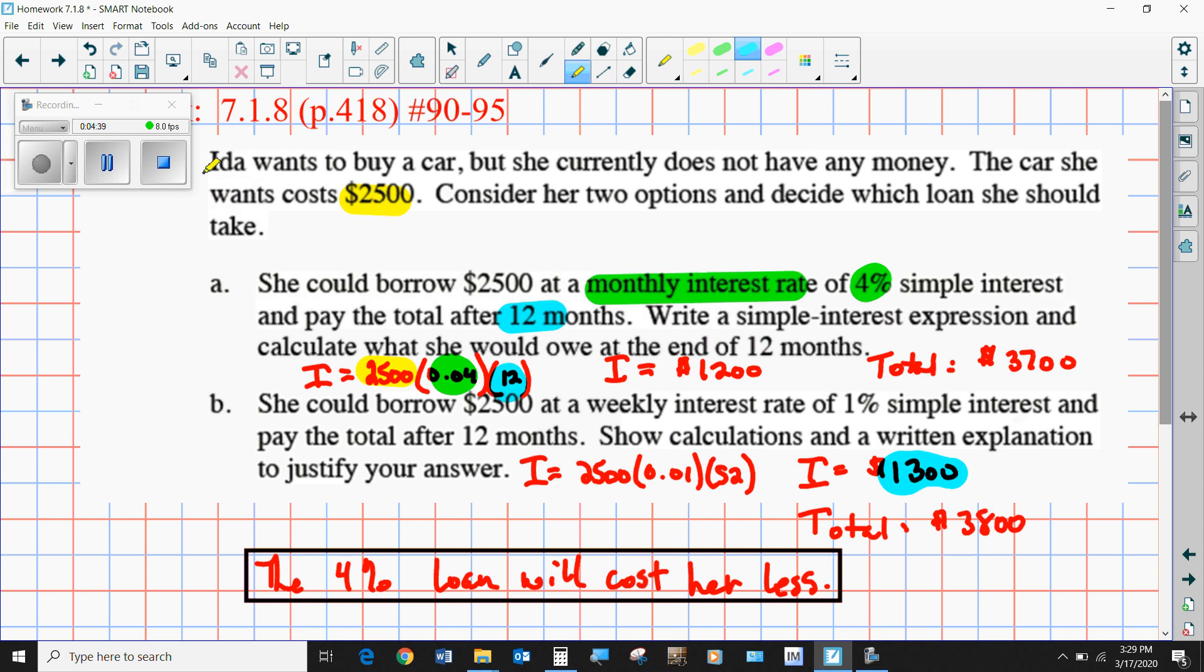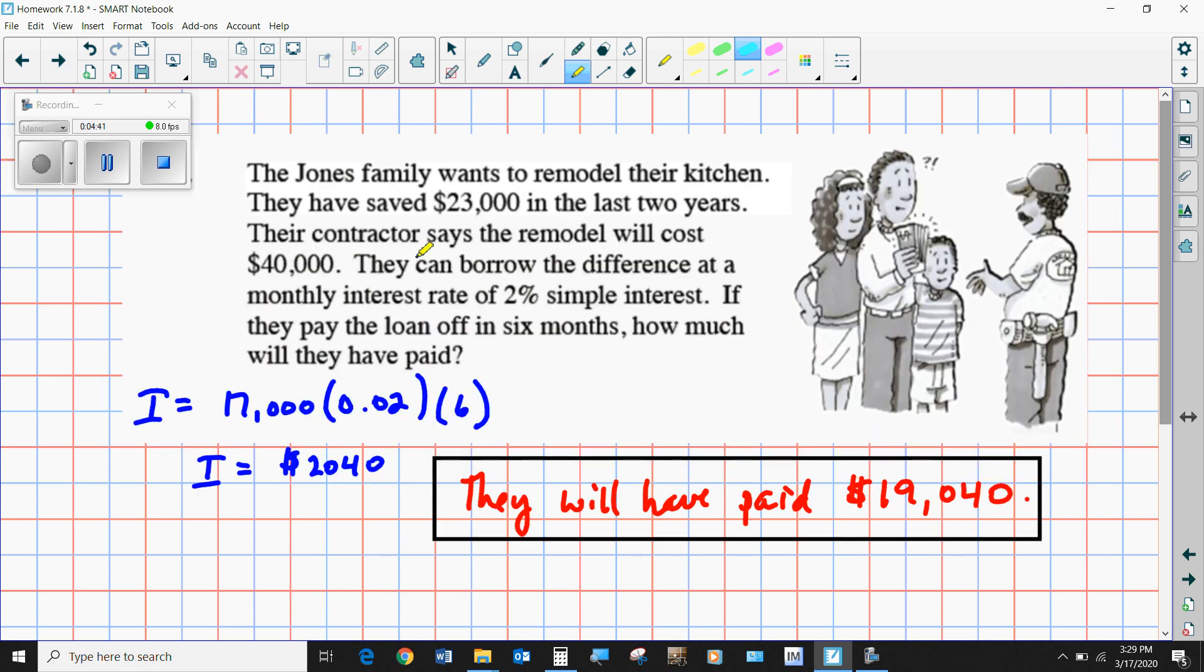The Jones family wants to remodel their kitchen. They have saved $23,000 in the last two years, and their contractor wants $40,000. So that means they have to come up with $17,000. They can borrow this difference at a monthly interest rate of 2%.